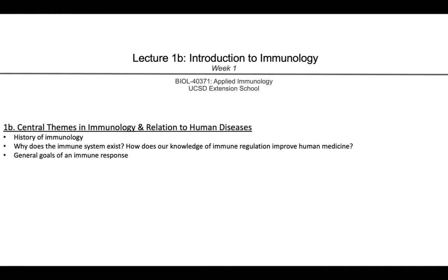Hello everyone and welcome back to week one of Applied Immunology. This is lecture 1b, the first of three basic lectures for week one that will introduce us to a broad overview of the immune system. We'll begin with an introduction to the origins of immunology and how they fit into human history. We'll then try to answer the overarching question of why the immune system exists and why this arm of biology has been developed and selected for over the course of metazoan evolution. Understanding this will help us learn how to apply our knowledge of the mechanisms of an immune response towards developing new treatments that improve human medicine. Lastly, we'll discuss the generic goals of a successful immune response on a very generalized and conceptual level.